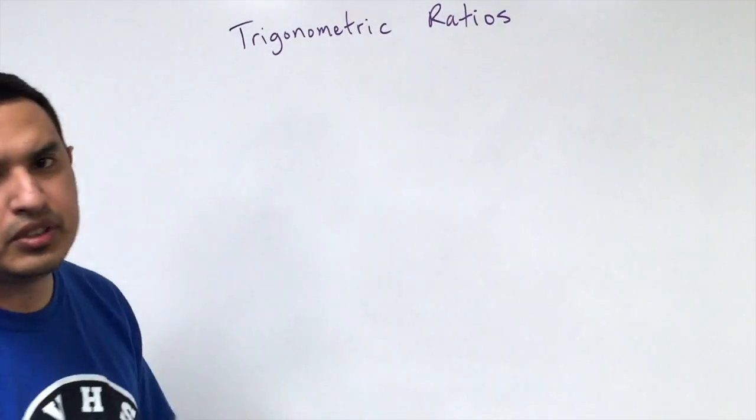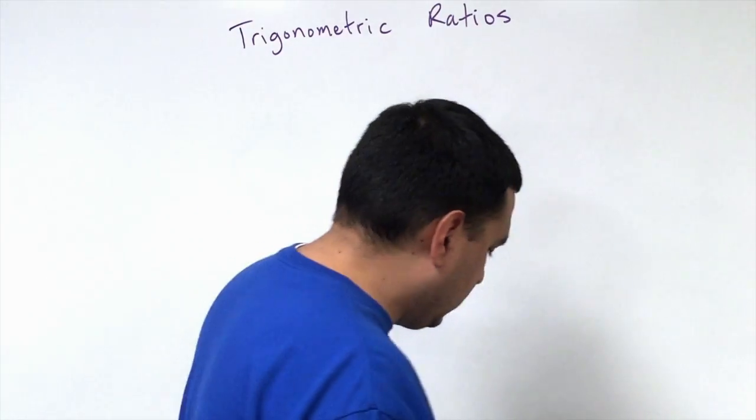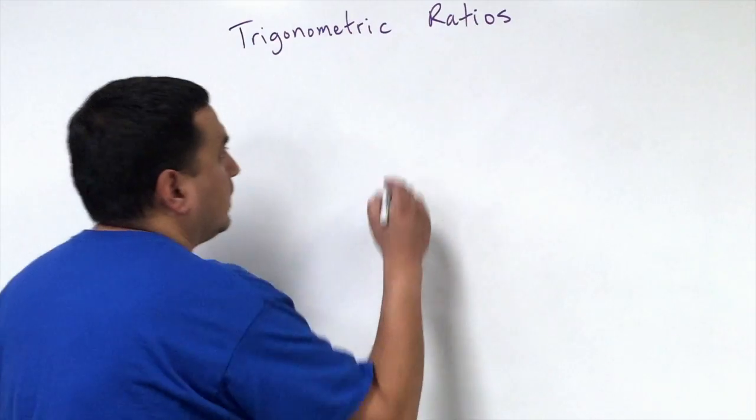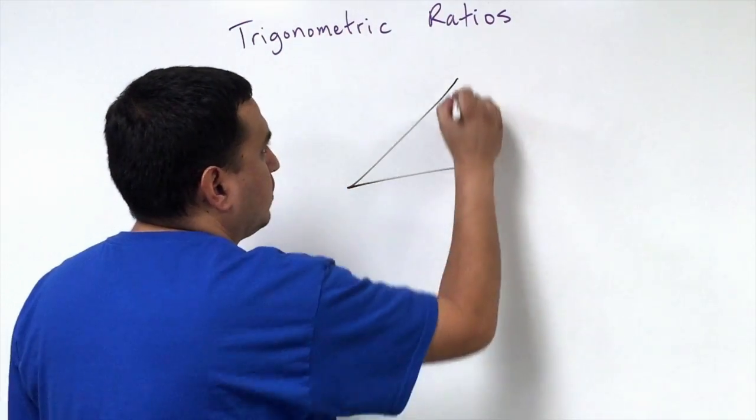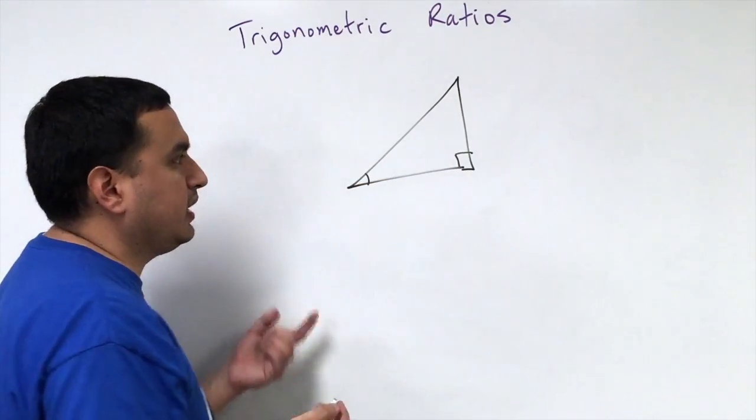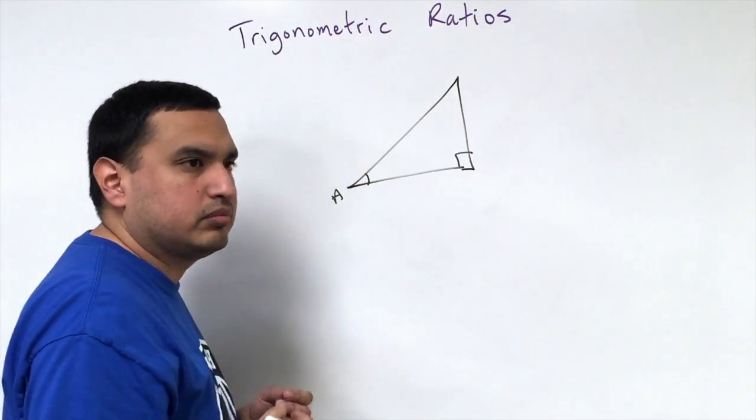With this lesson, we start talking about trigonometric ratios, or trig ratios for short. What we're doing is looking at right triangles, and it turns out there's a relationship or ratio between a given angle—we call this angle A—and the legs of the triangle.